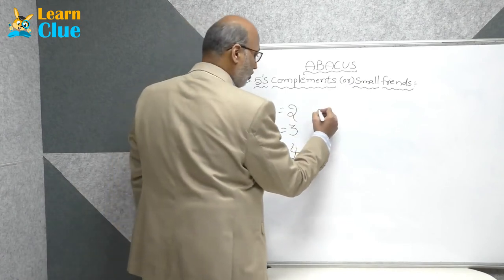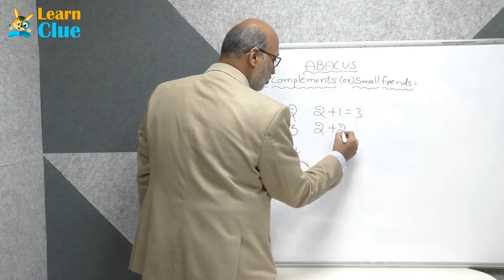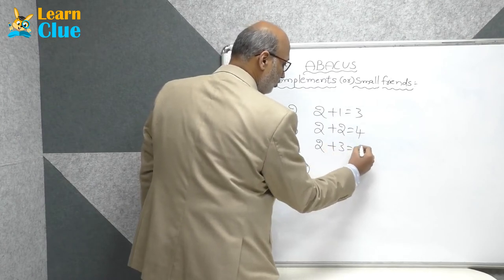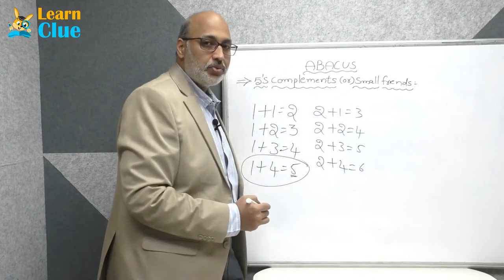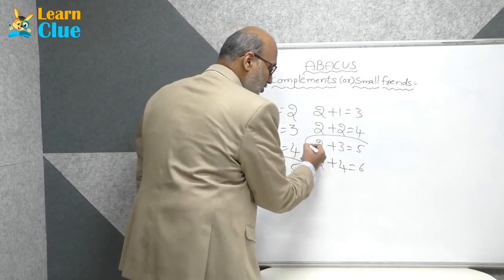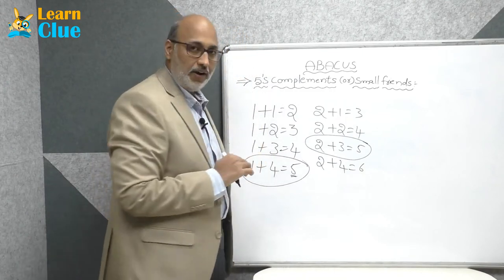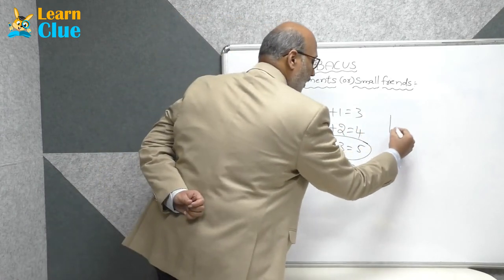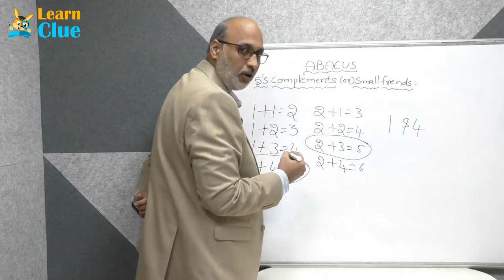Similarly, two plus one is three, two plus two is four, two plus three is five. Which one is the perfect complement to five? Exactly — two and three are the perfect complements of five.